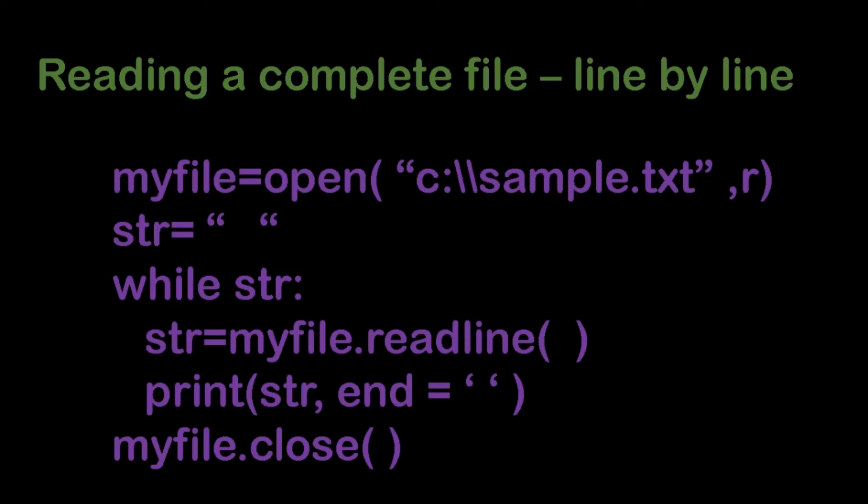Next, reading the complete file line by line. This is another method. First, my_file = open('sample.txt', 'r') mode. str is an empty string. A while loop is used — while str is true, the loop repeats. str = my_file.readline() reads each line and stores it. This displays the full file content. Finally, my_file.close() closes the file handler.